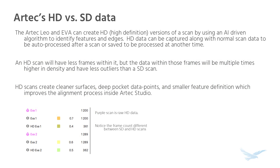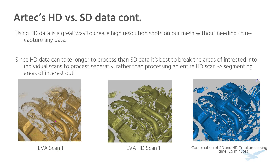So how can we improve our processes with Artec scanners? Artec has HD data available for the LEO and AVA. HD, or high definition data, is a scan that is made and has an AI-driven algorithm run on it to identify features and edges. HD data can be captured along with standard scan data and be processed automatically after the scan is done or at a later time. HD data can have less frames within it, but the data within those HD scans is significantly better than the standard definition ones. For every one HD frame, it's about the same as five standard definition ones, since the data is much denser and cleaner. The increased quality in the raw data also makes it easier to improve on the meshing, the feature definition, and accuracy of our scans.